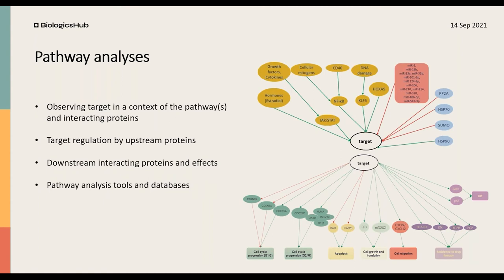To better understand target regulation and molecular and cellular function, we analyze the target in the context of pathways and networks. We analyze upstream regulators — from transcription regulation to target stability regulation — as well as downstream interaction partners, cellular pathways, and their effects. By understanding this network, we can investigate what would be the molecular or cellular effect of modulating target activity.